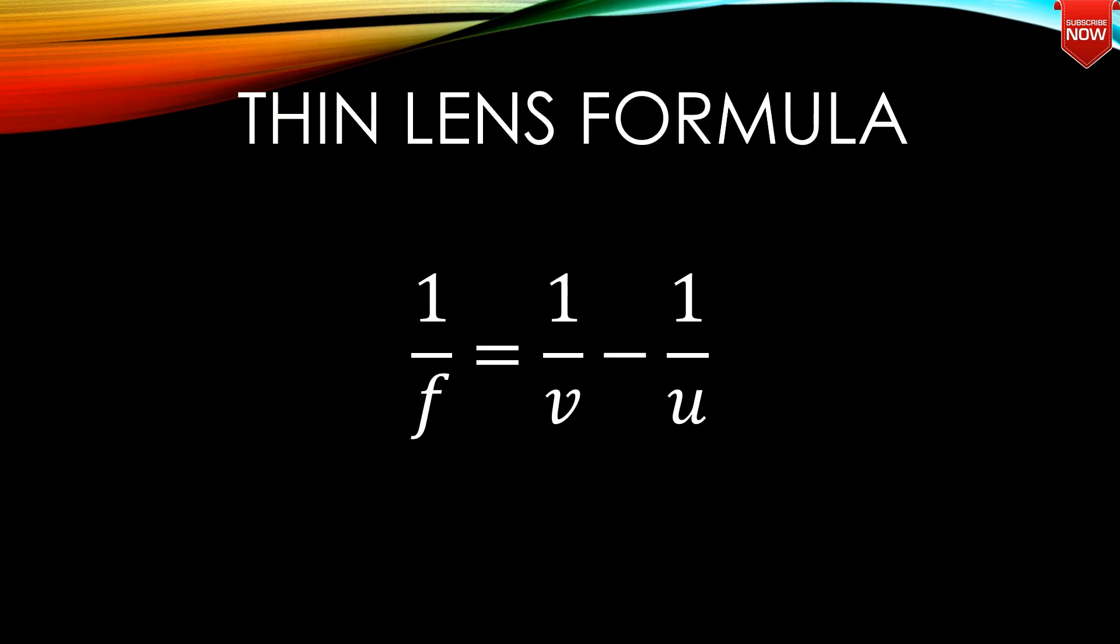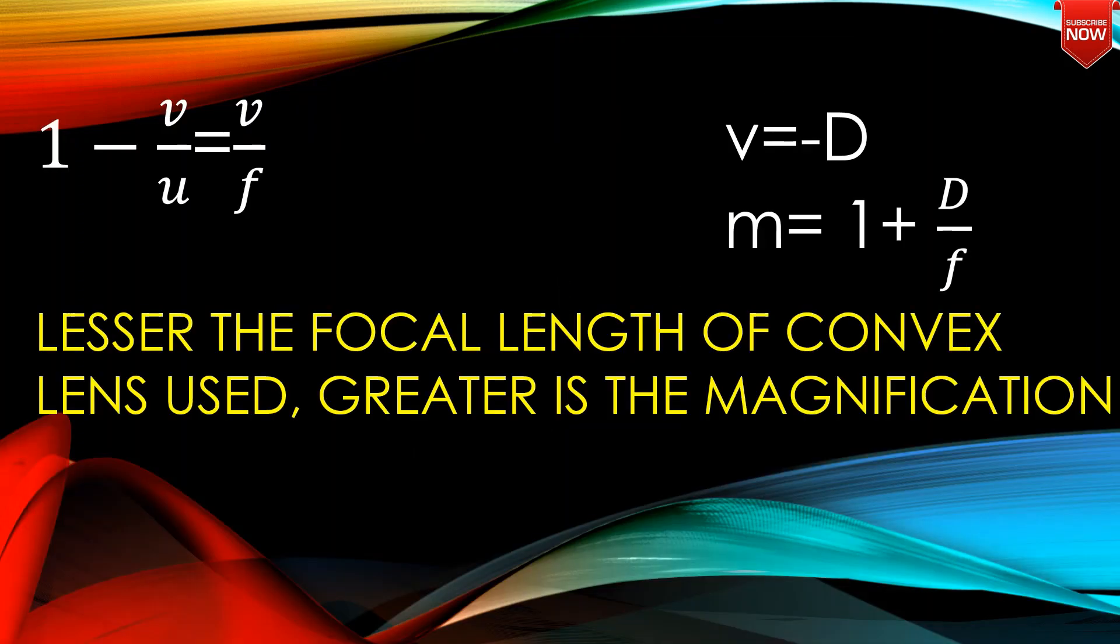Using the thin lens formula, 1 by F equals 1 by V minus 1 by U. Multiplying the equation, V by U equals V by F.